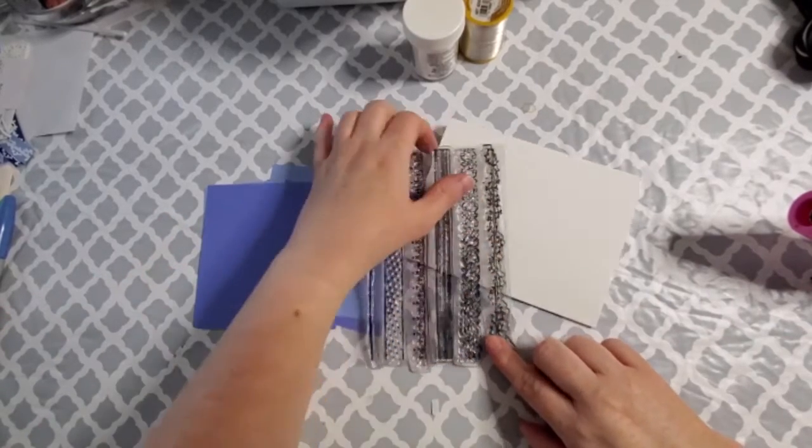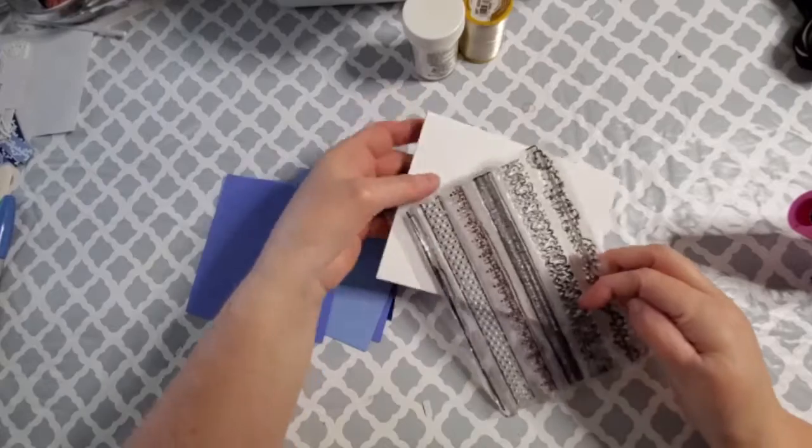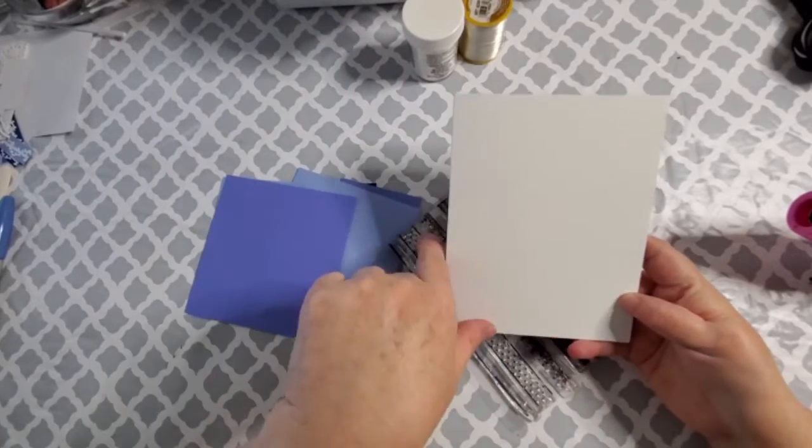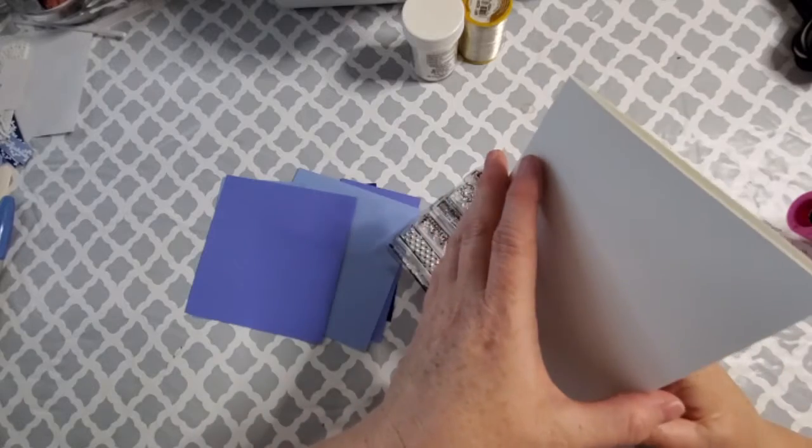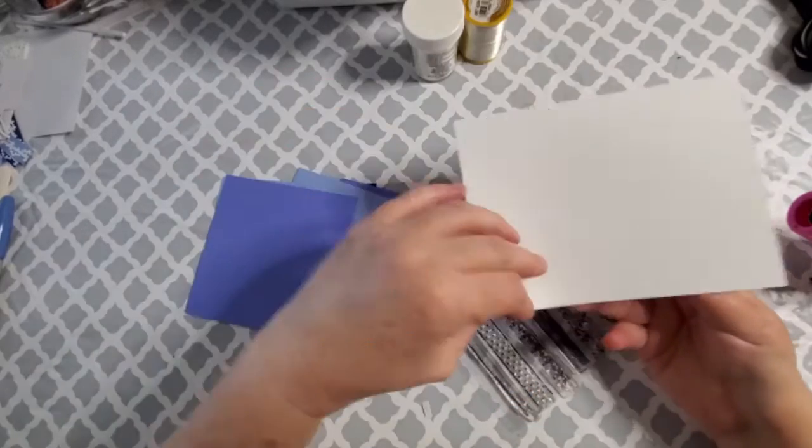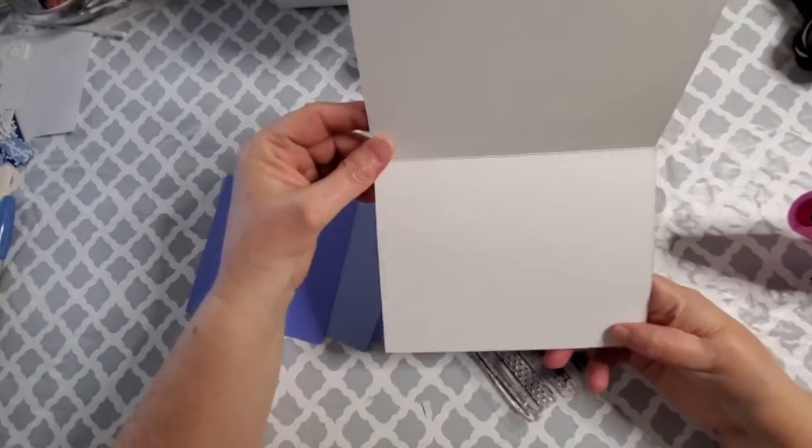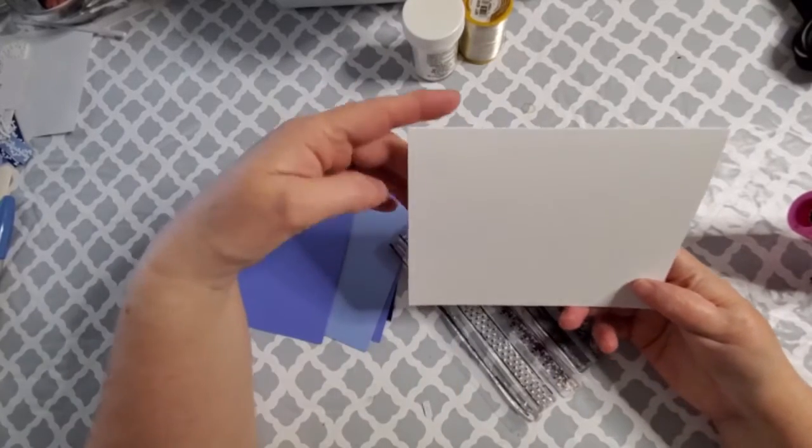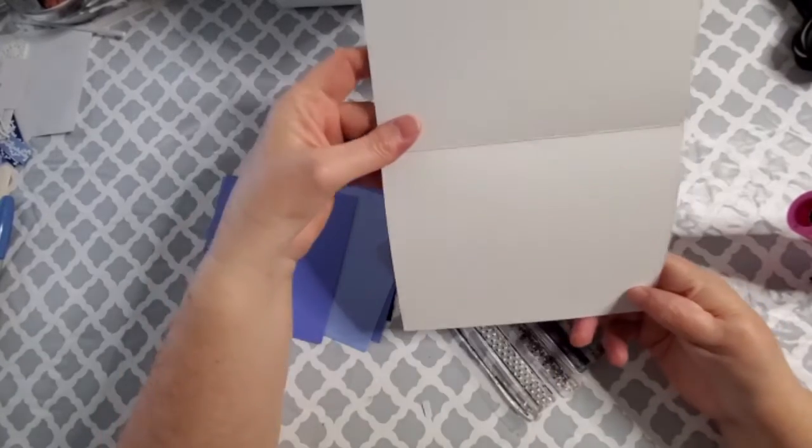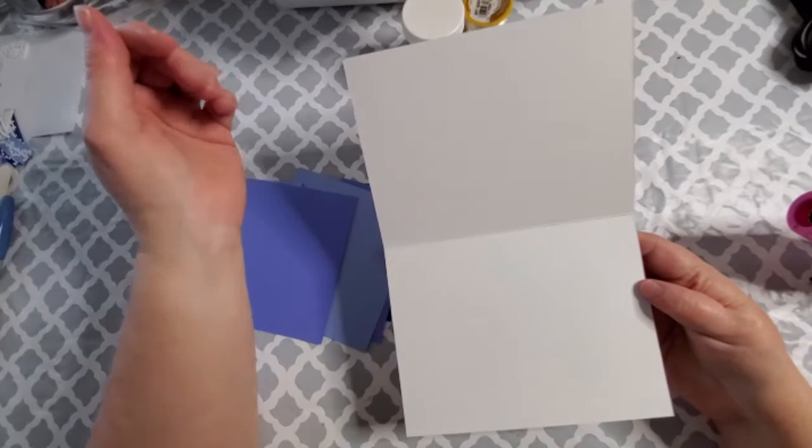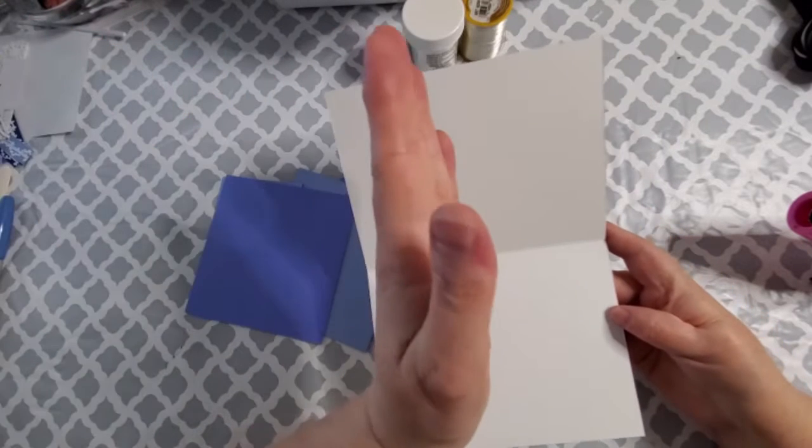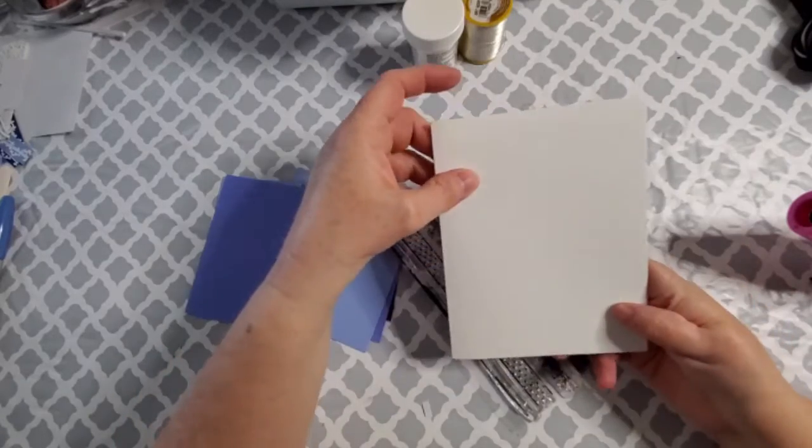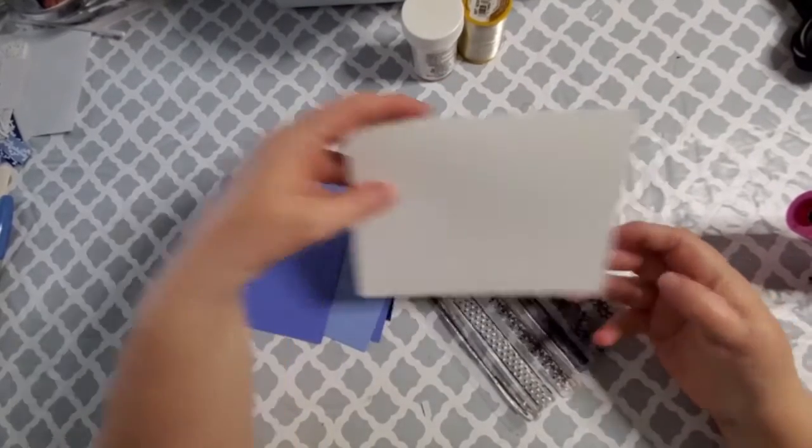We're going to start with this stamp. And this is my card base already made. It is four and a quarter by five and a half. It is a side folding card. I cut an eight and a half by eleven piece of cardstock, cut it at the five and a half mark and then scored it at four and a quarter to make this card base.